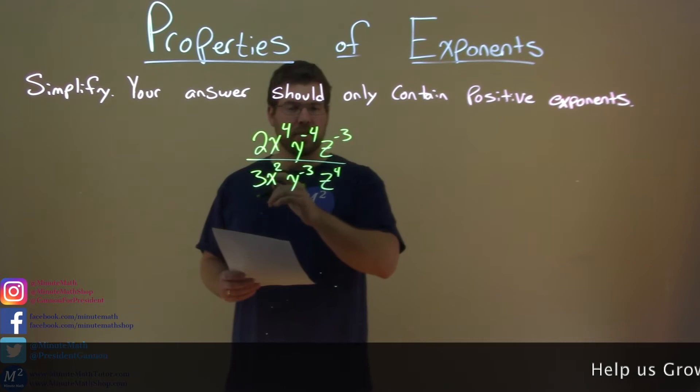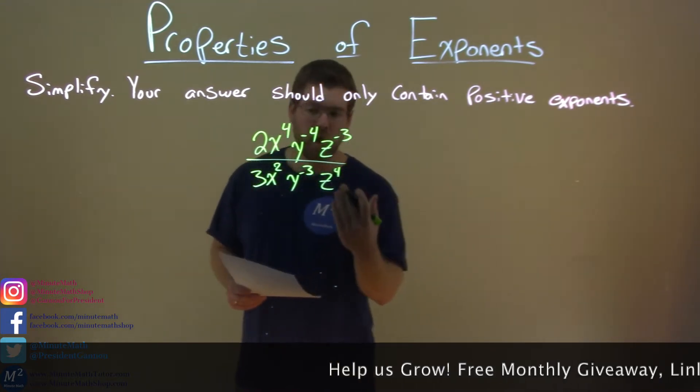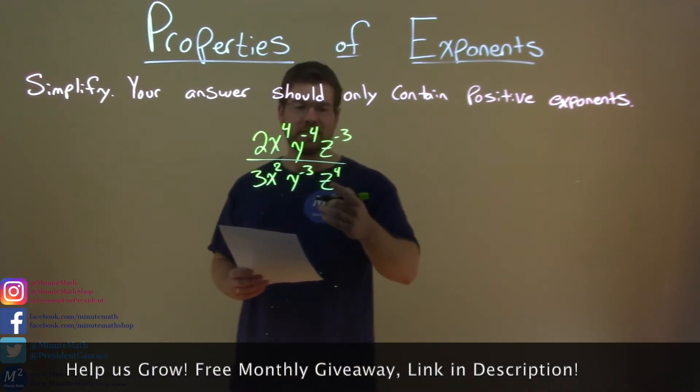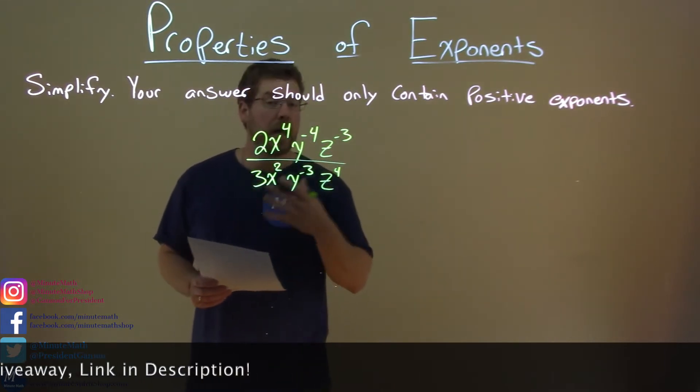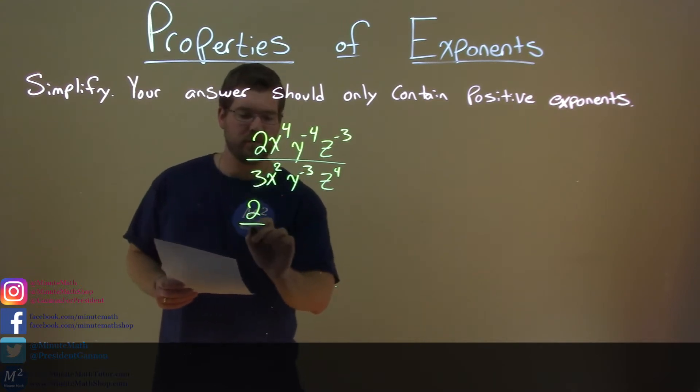2x to the 4th, y to the negative 4th power, z to the negative 3rd power, all over 3x squared, y to the negative 3rd power, z to the 4th power. We first look at our coefficients, 2 and 3. Nothing to simplify there, so I'm just going to leave it like this, 2 thirds.